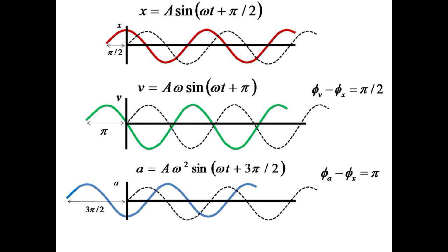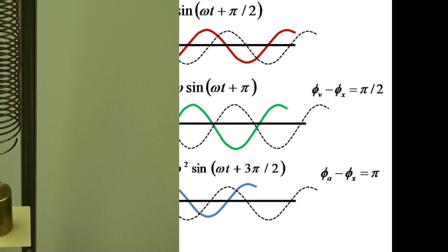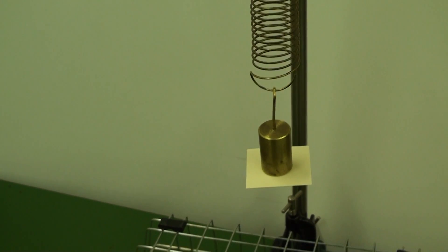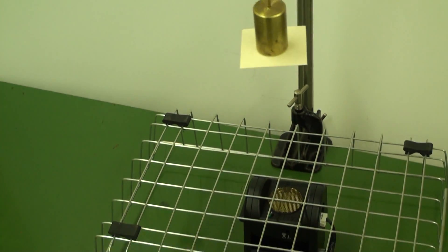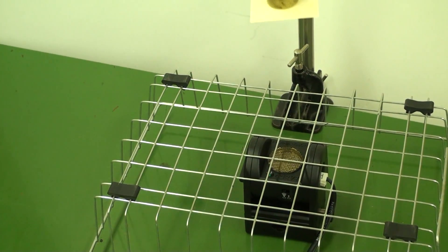position is given by a sine omega t plus pi over two, velocity is given by a omega sine omega t with pi over two additional phase, and acceleration is given by a omega squared times sine omega t with a phase difference of pi. Tape a piece of card stock on the bottom of the spring mass, and allow it to oscillate with a small amplitude above the motion sensor.